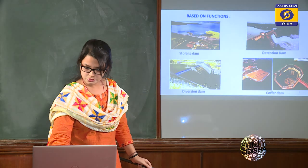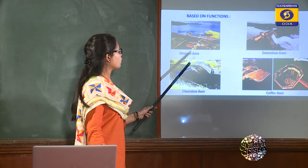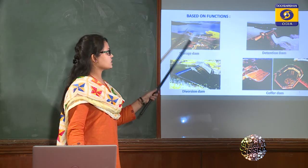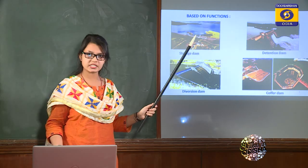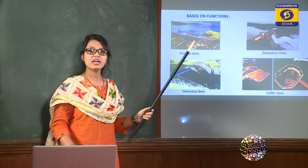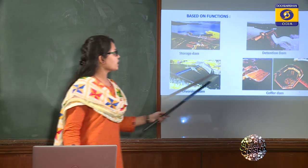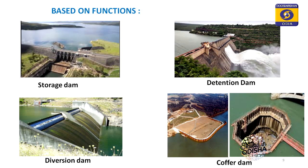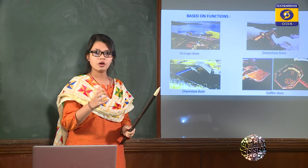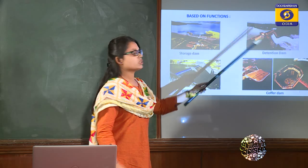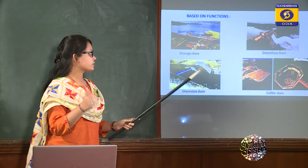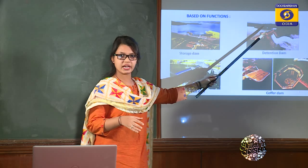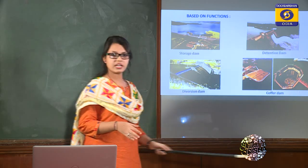Based upon functions: a storage dam stores the excess amount of water for various purposes like irrigation, hydroelectric power generation, or navigation. A detention dam detains the excess water and prevents the occurrence of floods in the downstream area. Detention dams are mostly meant for flood control, and they release water through spillway gates.